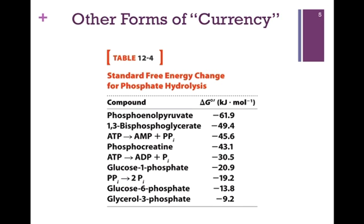We see a similar change in free energy associated with hydrolysis of other phosphate-containing compounds in this table illustrated from your book. Here we have the standard free energy changes associated with hydrolysis of multiple phosphate compounds. You can see they're all favorable changes, some larger than others. The larger changes simply mean that the products are much more stable than the reactants or substrates. It depends on the nature of the molecule and the phosphate or phosphoryl group that's being released.